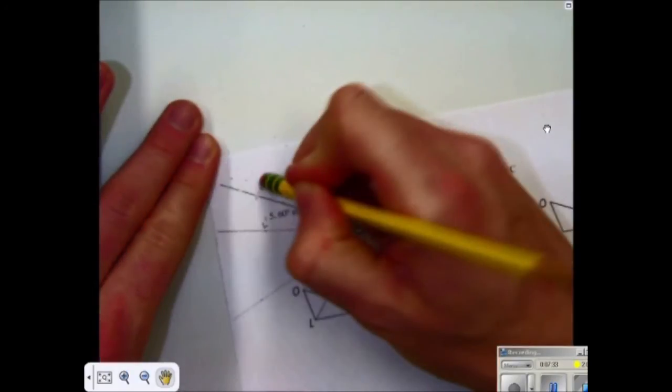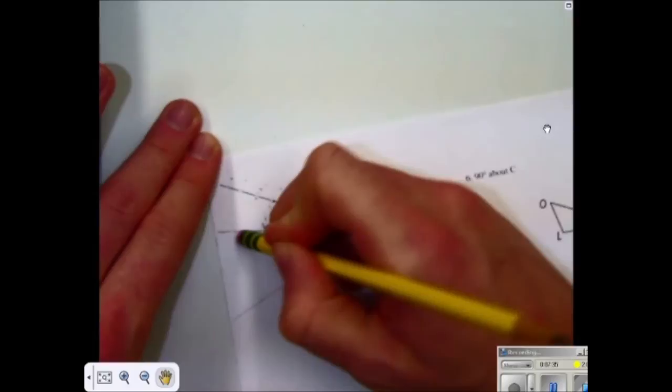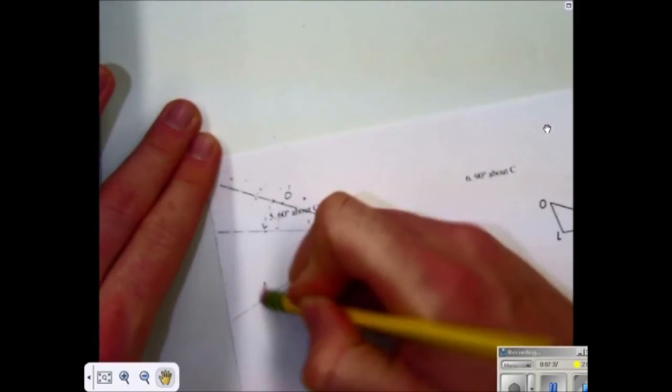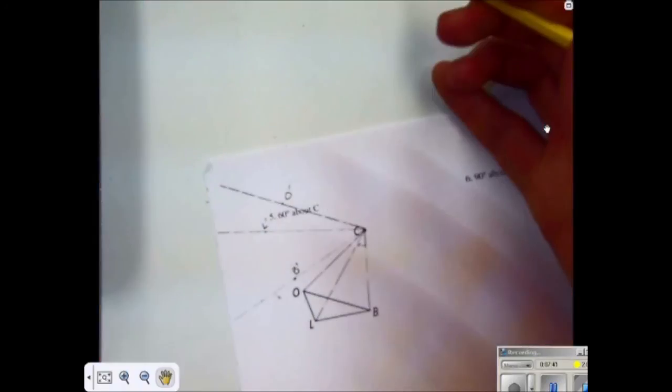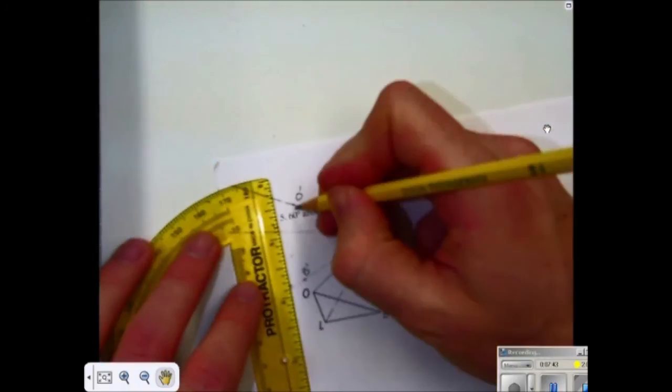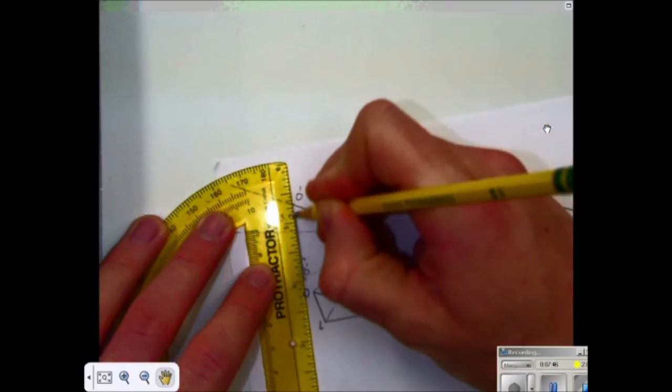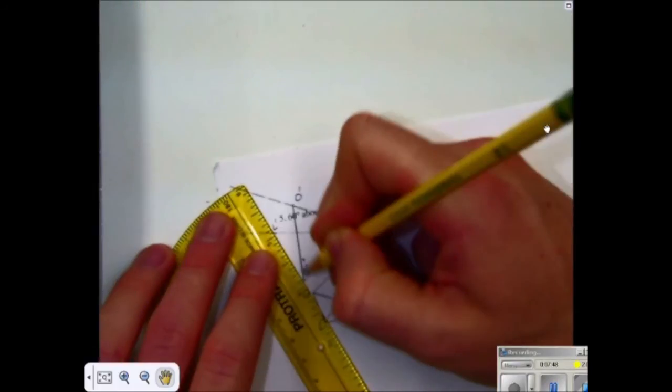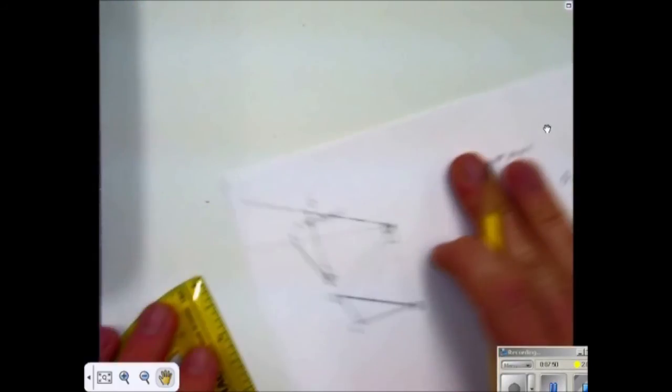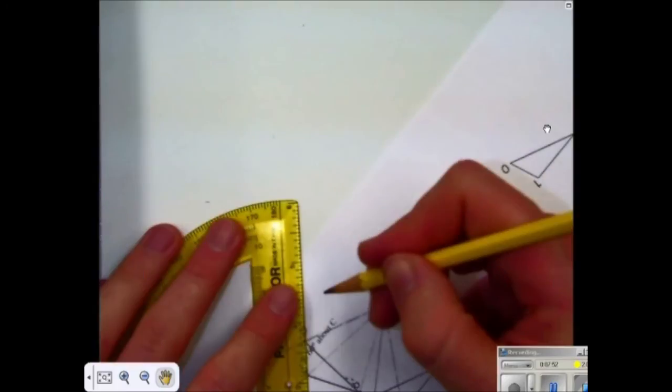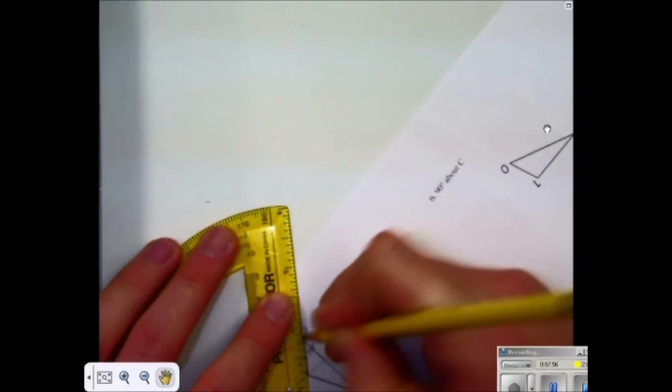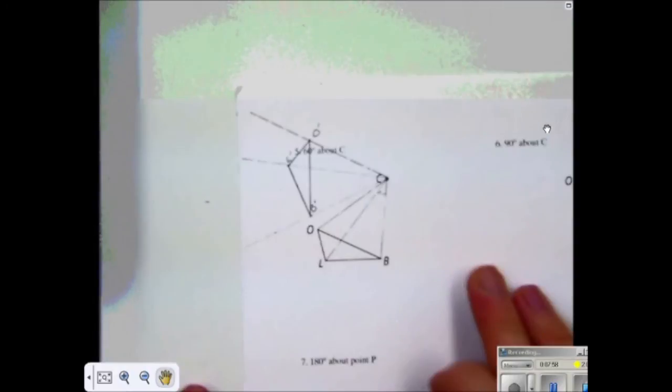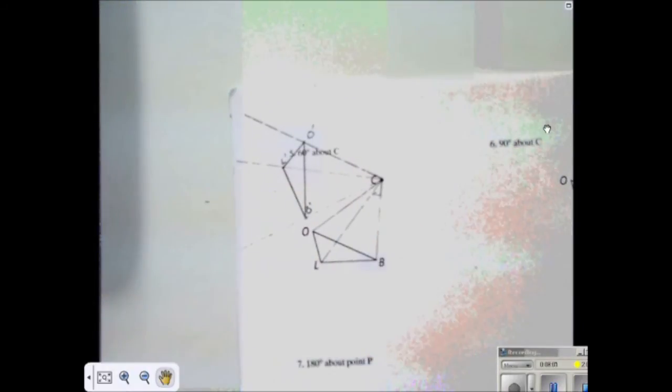I'll go back through and just make these dashed, just so it's easier for me to see. And I'll draw in dark, triangle O prime, B prime, L prime, which is the reflection, I'm sorry, rotation, of BLO about point C. And you do that for each type of triangle or, you know, square or rectangle or parallelogram that we have.